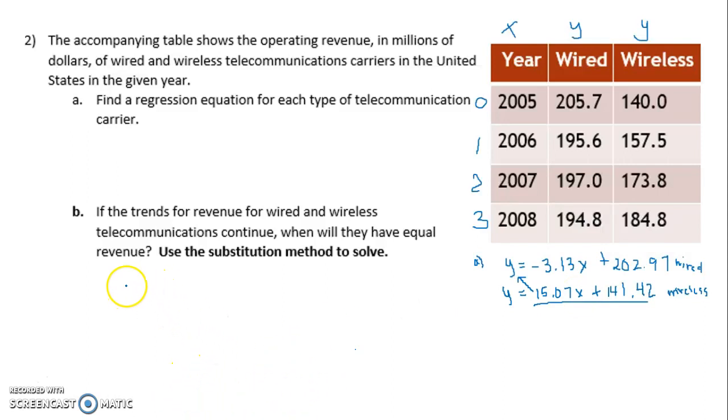So I'm substituting the second equation in for the Y. So 15.07x plus 141.42. Then I get to the equals, and then I had negative 3.13x plus 202.97. So now I just have to do the algebra in order to figure out what X is.